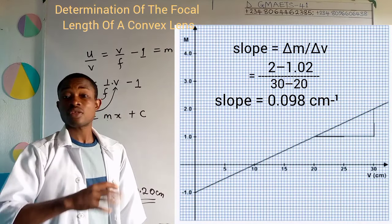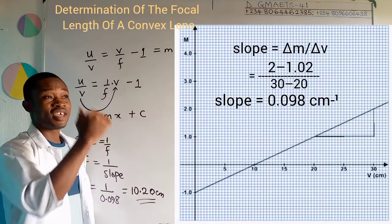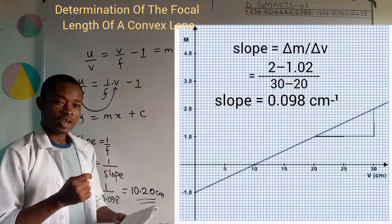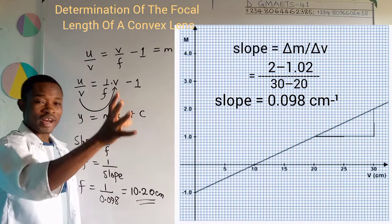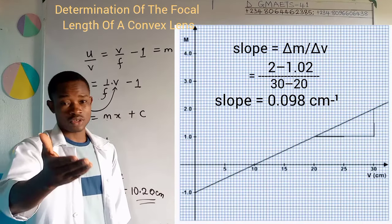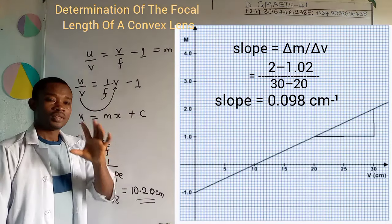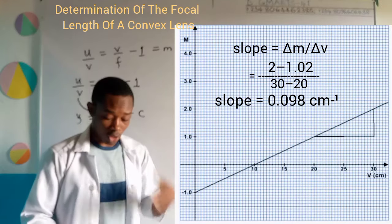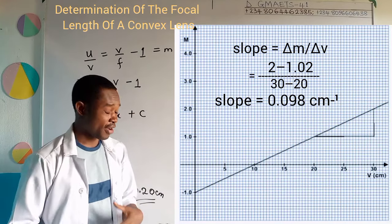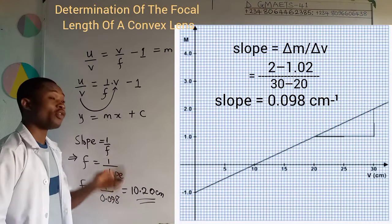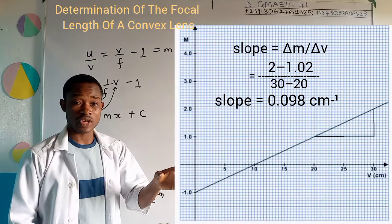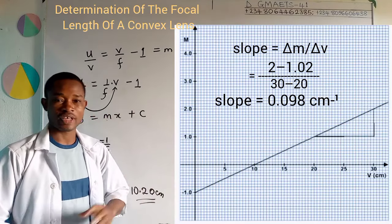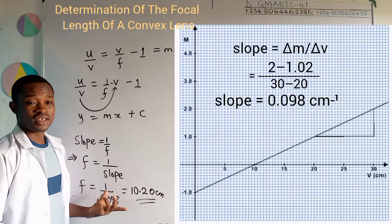Once you plot your own graph of u over v against v, find the slope. The instruction asks you to find the slope and obtain the focal length from this graph. The focal length equals 1 over the slope. I obtained a slope of 0.098; substitute your own value. Take note of the formula: focal length equals 1 over slope — press the calculator and you get your answer.